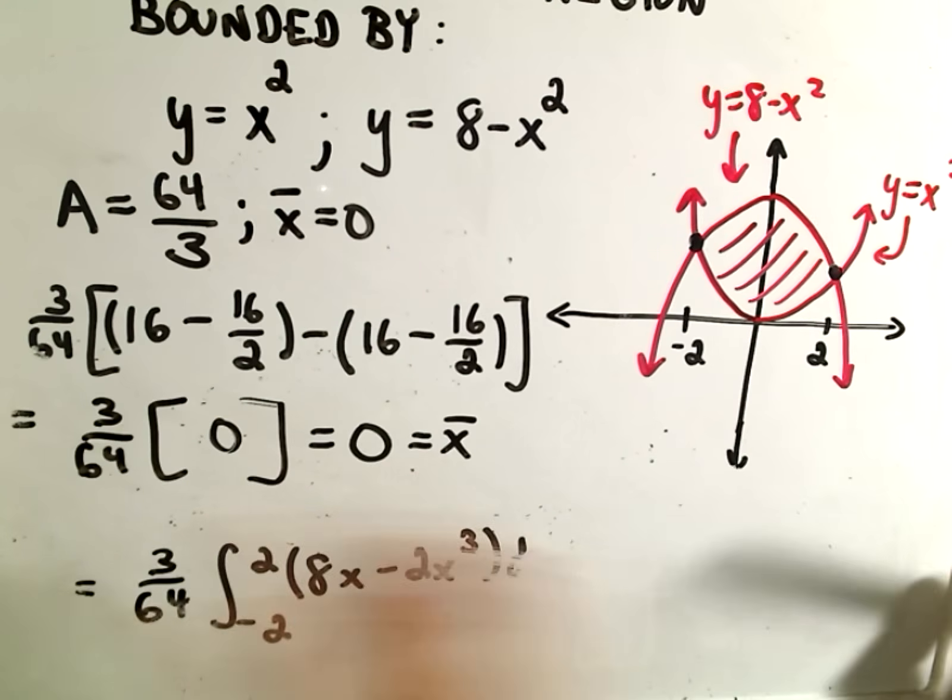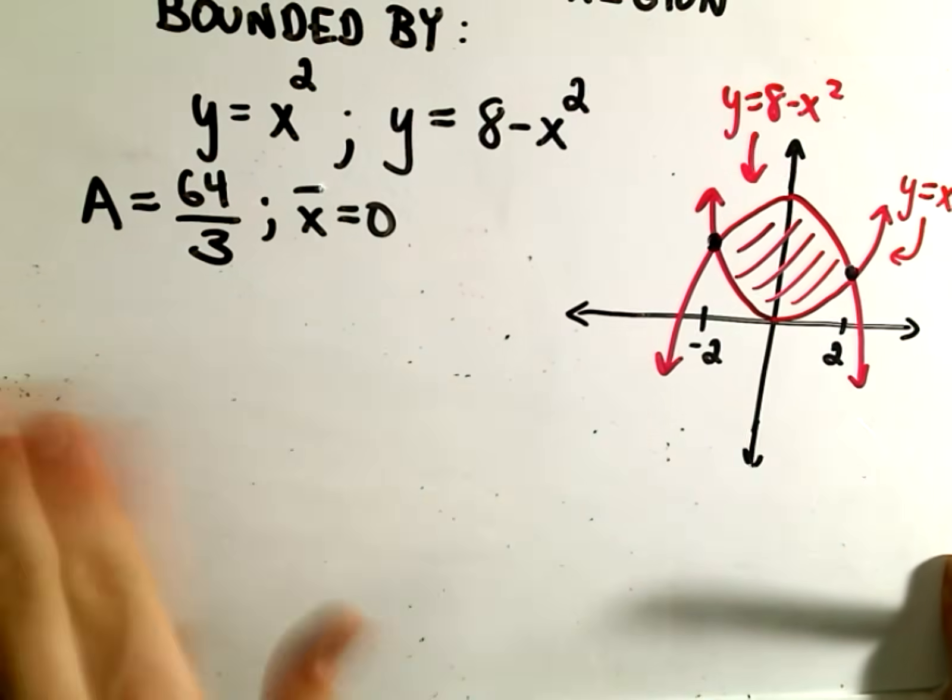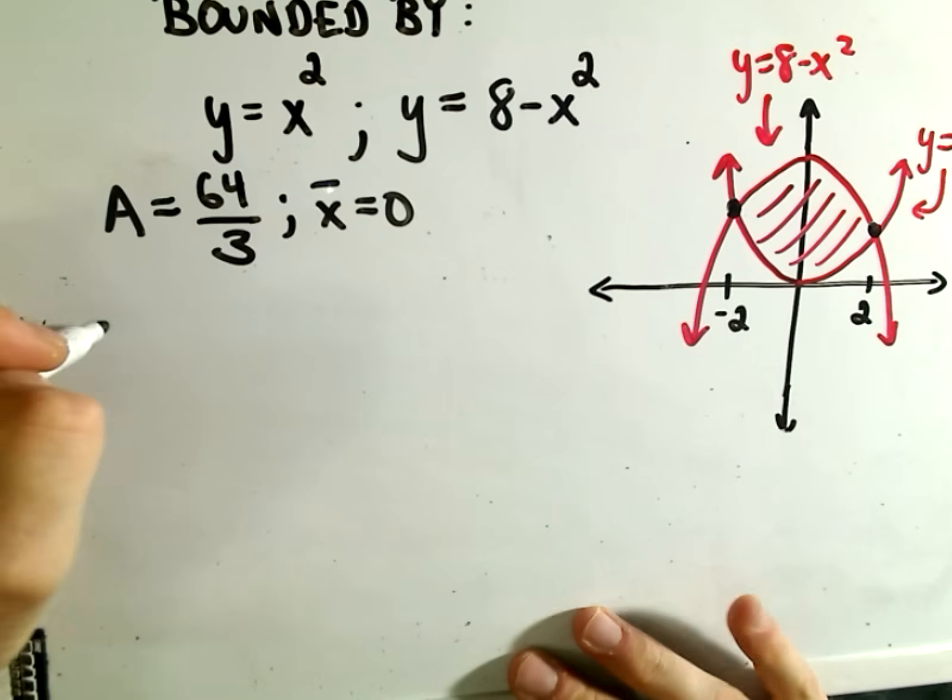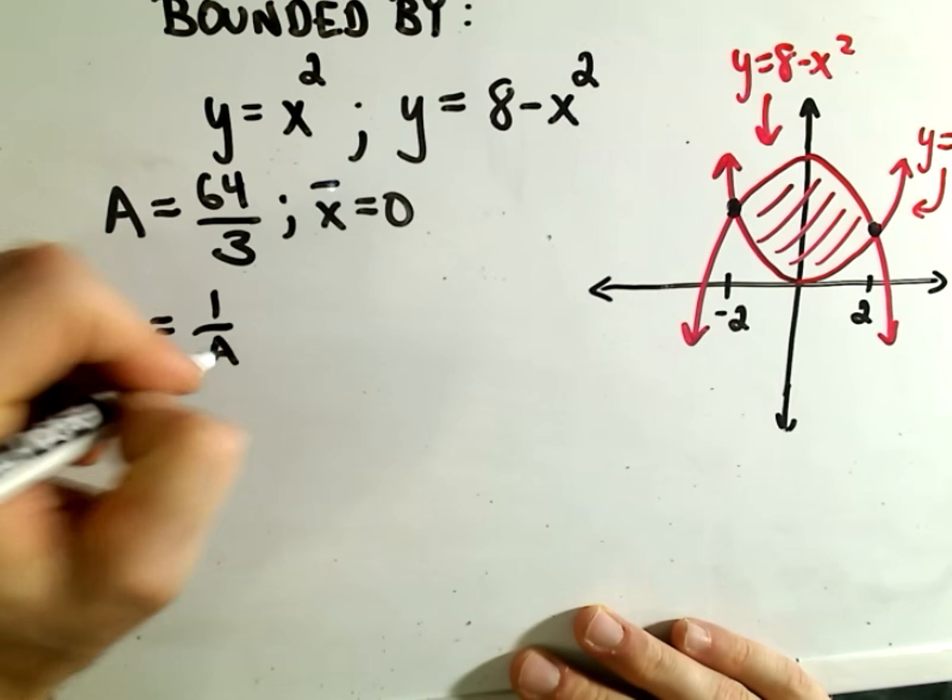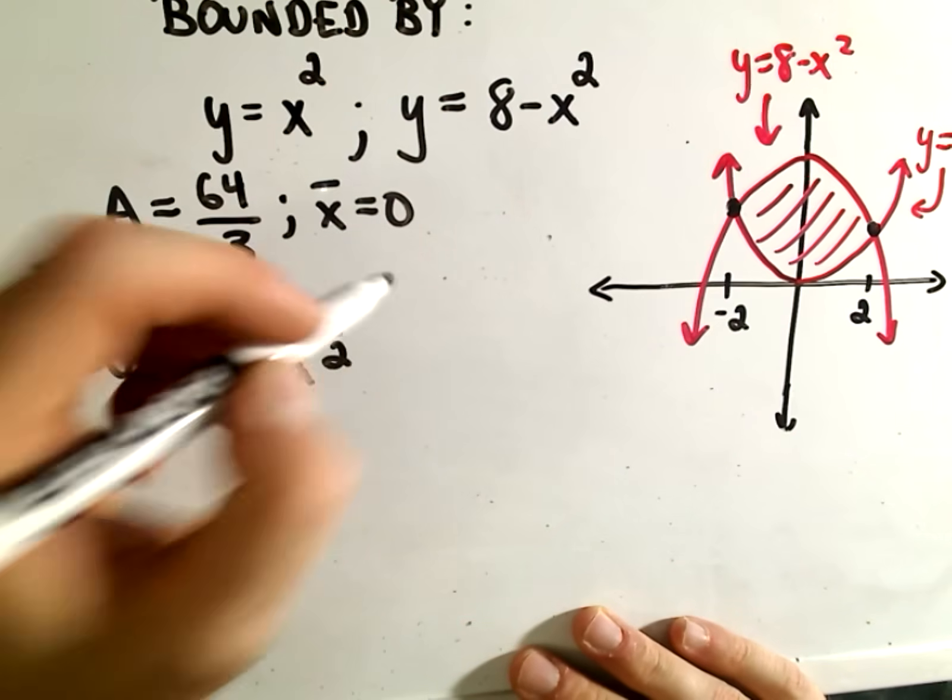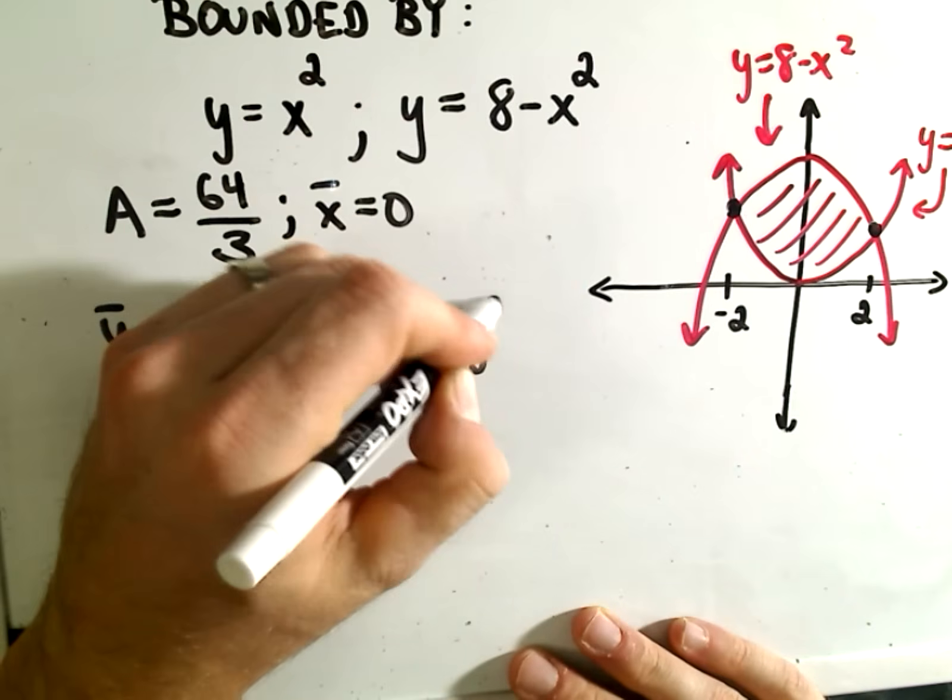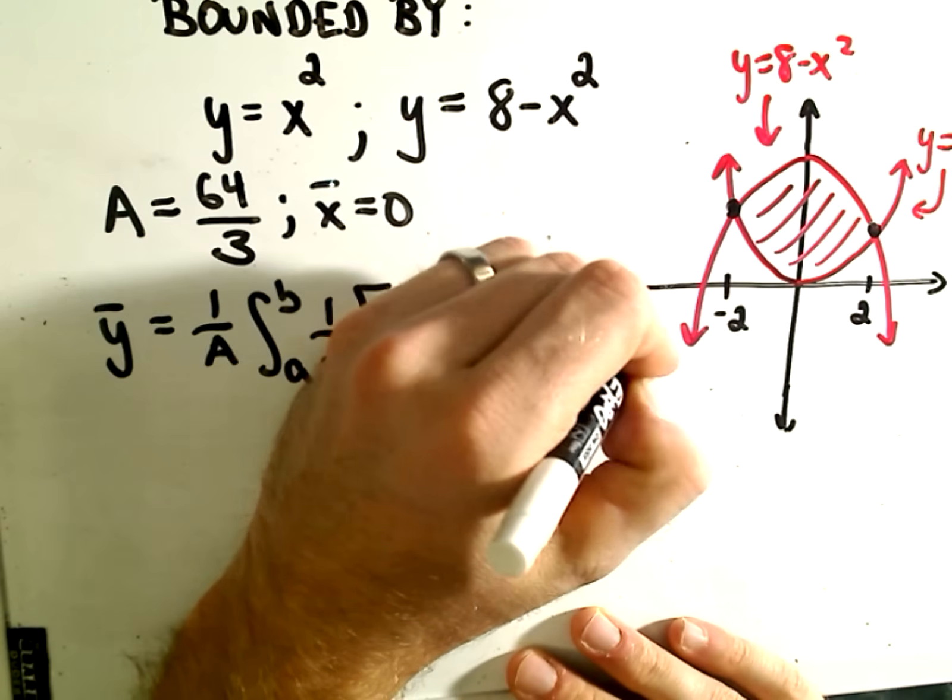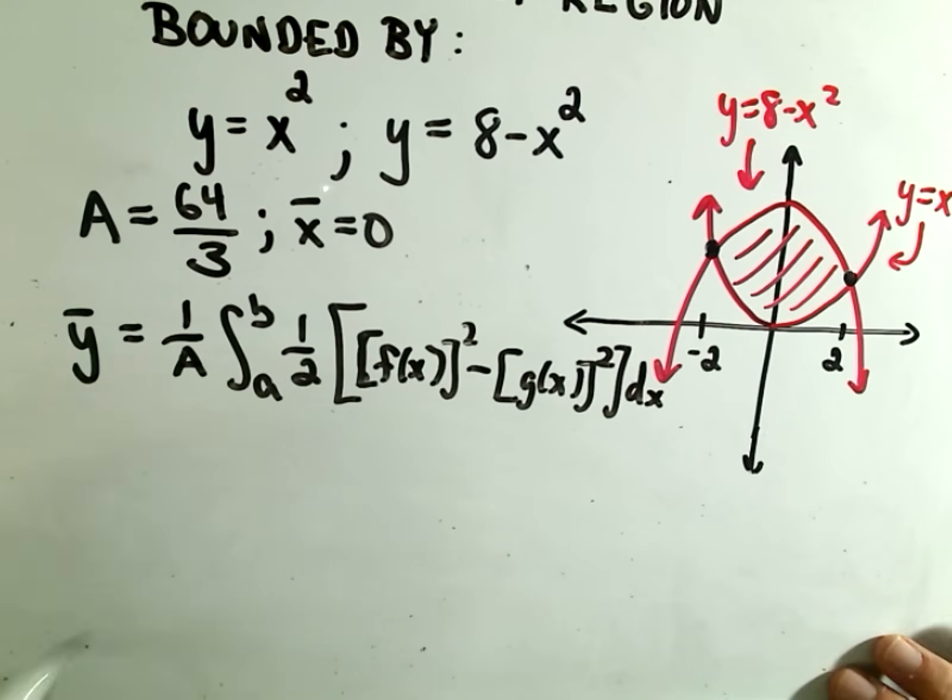So let's compute our y-bar value. This one will be a little more tedious. So y-bar, remember, that's 1 over the area from a to b. We have to take 1/2 times the top function squared minus the bottom function squared, dx. Let's calculate this.